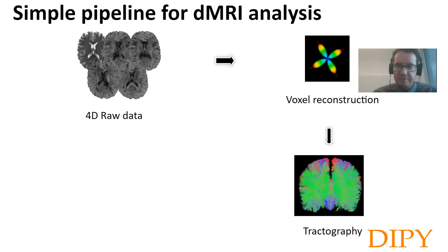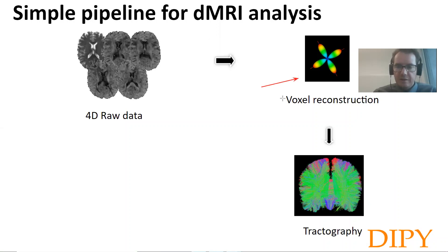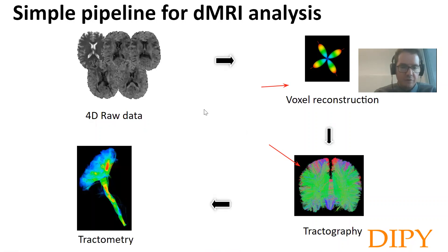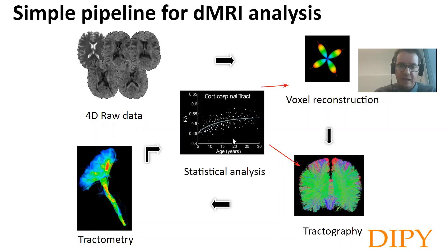A simple pipeline requires taking the 4D raw data, then doing some voxel reconstruction as shown here. After that, you have to combine information along the voxels and build tractographies and tractograms representing and approximating the underlying anatomy of the connectivity of the brain. And then you have to do tractometry analysis, which requires some segmentations of the tractograms, and also statistical analysis.